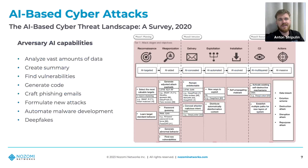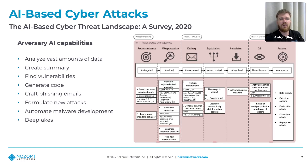The second domain is AI-based cyber attacks. Cyber attackers also see the value of using AI and machine learning to make their attacks faster, more effective, and more accurate. They use it for applications such as analyzing large amounts of data and creating victim summaries, finding vulnerabilities, generating code and automating malware development, crafting phishing emails, formulating new attacks, and creating deepfakes.